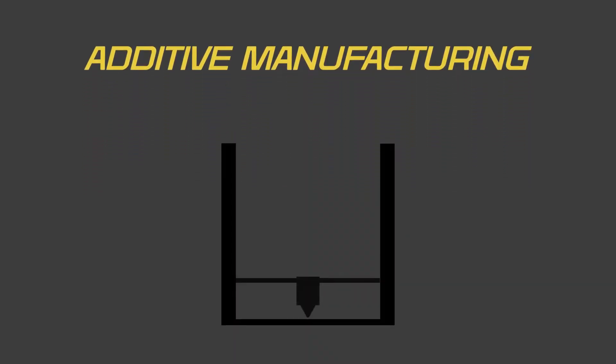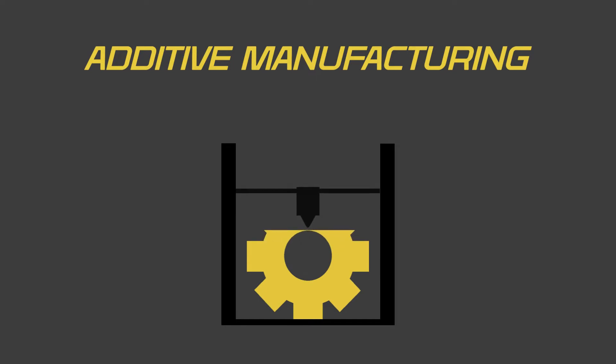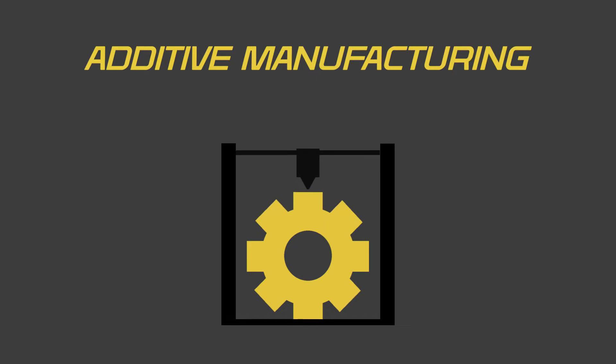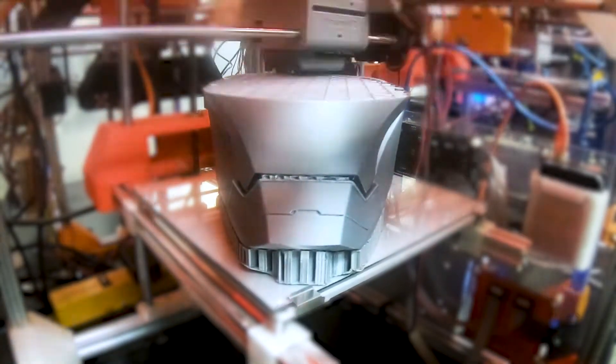You have subtractive manufacturing where you have a tool removing material. Additive manufacturing is when you have a tool adding material. So rather than having a giant block and then taking stuff away until you have the part that you want, you have nothing and then a tool goes around and adds material over time until it grows the thing that you want. That is what additive manufacturing is — you build up a part, layer by layer generally, from nothing.